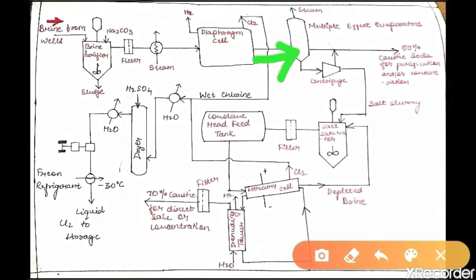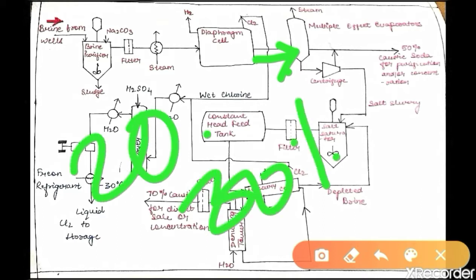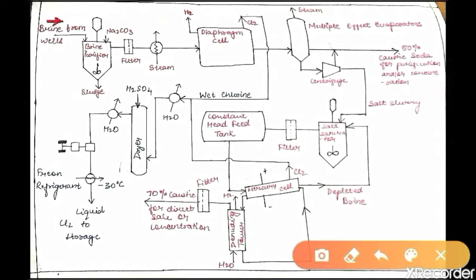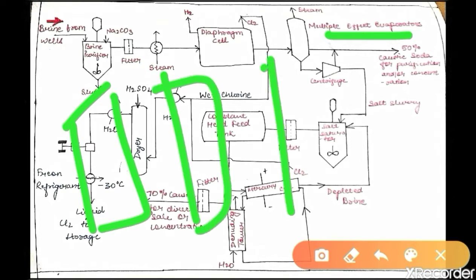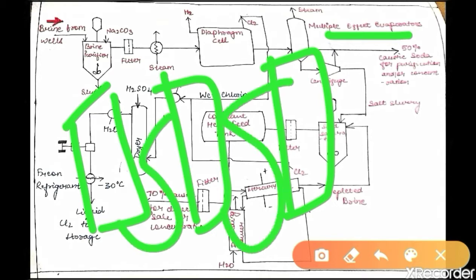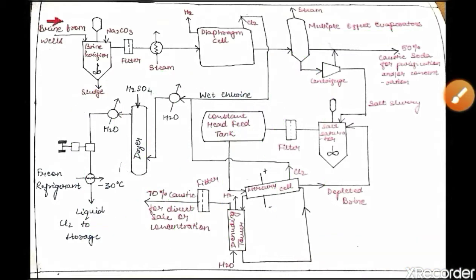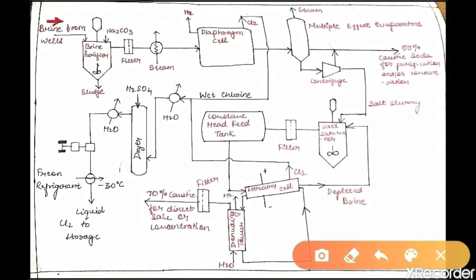The NaOH produced in the diaphragm cell is not highly concentrated — it is a dilute liquor containing only 20–30% NaOH. To concentrate it, multi-effect evaporators are used in series — triple effect or more — which concentrate the solution up to 50% NaOH.